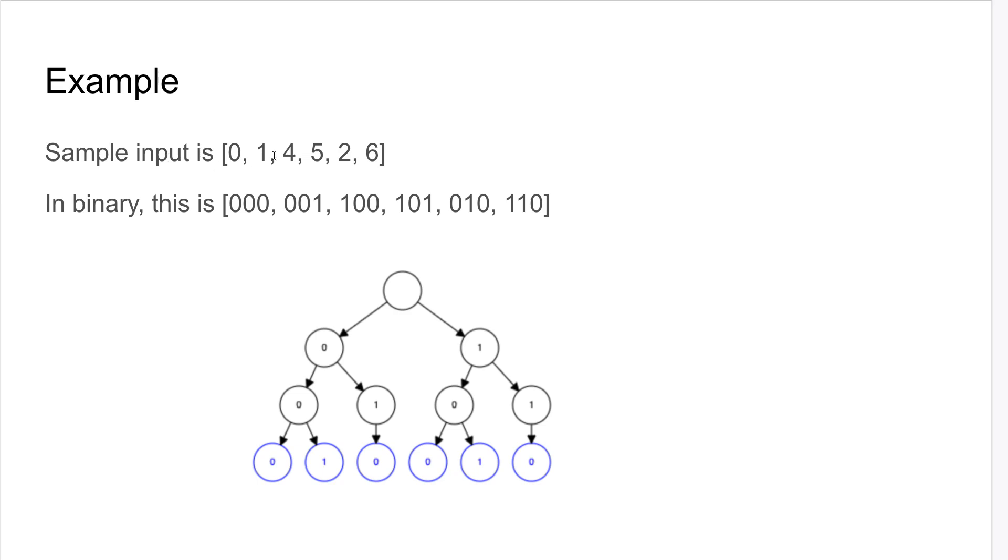For example, if you look at the sample input [0, 1, 4, 5, 2, 6], in binary this is [000, 001, 100, 101, 010, 110]. This is the trie we get. You can see that for this node, every terminal node in the right child also appears in the left child. This is true for everything.